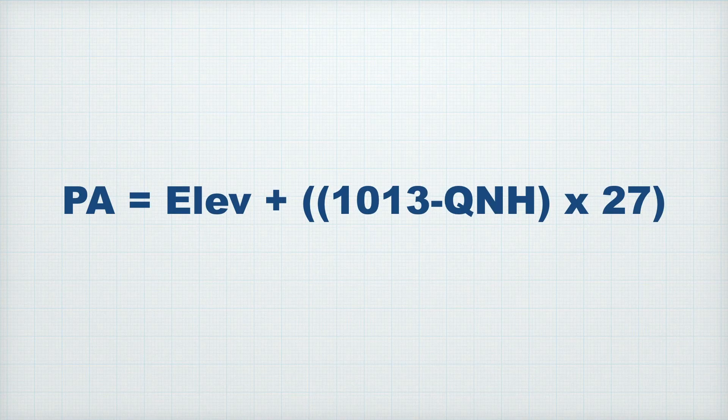To summarise: QFE gives us height above an airfield, QNH gives us altitude above sea level, and QNE gives us flight level, also known as pressure altitude. Here's a formula you need to know: pressure altitude equals the current elevation plus 1013 minus the QNH, times 27.